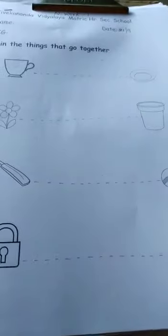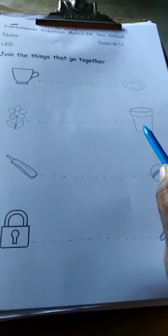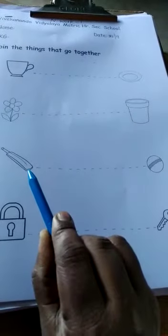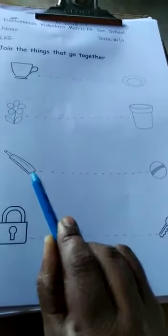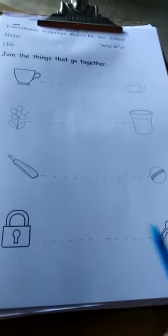Now, cup and saucer. Cup goes with saucer. Floor. Next, cricket bat. Bat and ball. Next, lock and key.